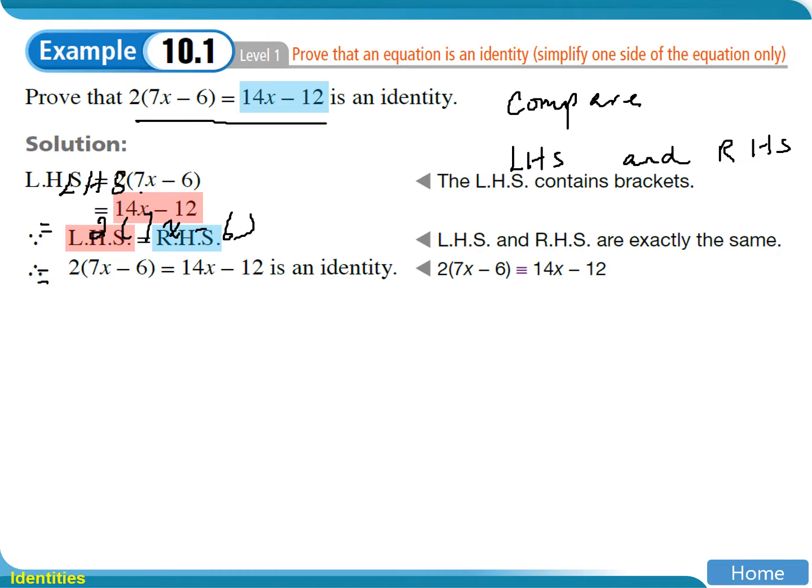We need to multiply 2 into each part inside the brackets. Therefore, you have 14x minus 12.